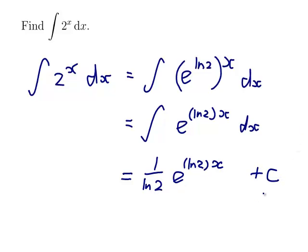And I reckon I should rewrite this bit the way it was to begin with, because then it will look pretty. So 1 over ln 2 times 2 to the x plus c.